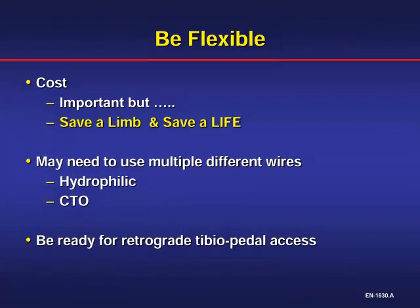The issues related to retrograde access and CLI: when we do these presentations, folks ask why you spend two hours trying these procedures and using ten wires. I always say: you save somebody's limb, you save their life. The impact of saving a limb is tremendous. In these kinds of lesions and patients, you need to be considerate and mindful that you have to use multiple devices. If you think you're going to cross a CTO in a CLI patient with one or two wires, the likelihood is less than 10–15%. You need to be comfortable with a series of wires used interchangeably — CTO wire to hydrophilic and back. You have to have a lot of patience and familiarity with equipment.